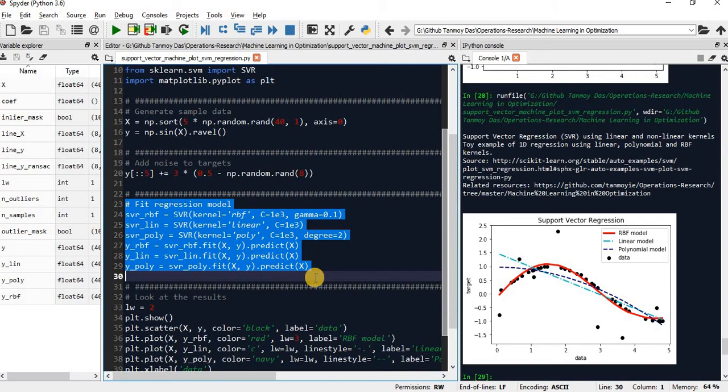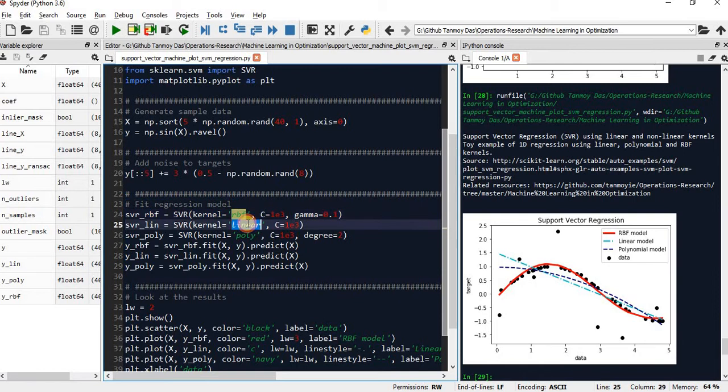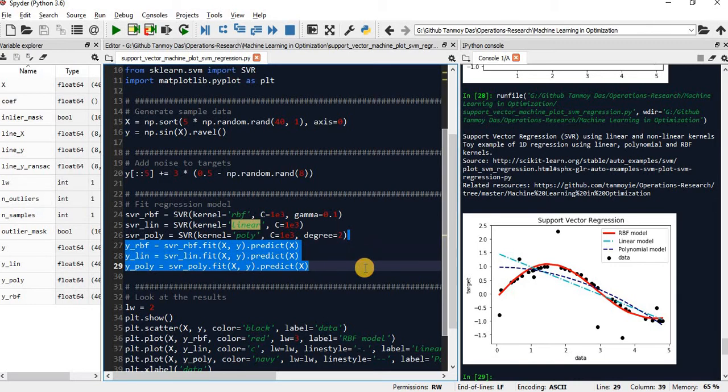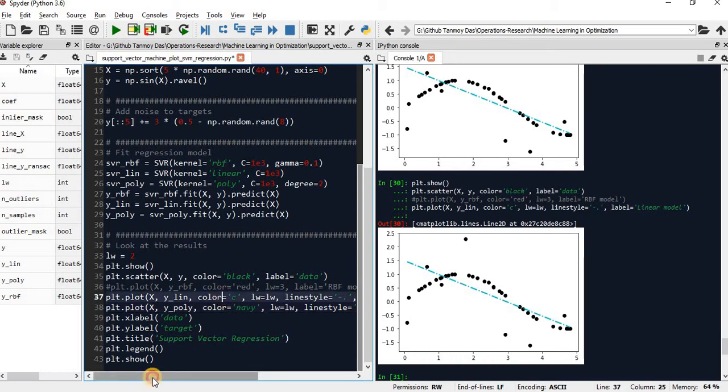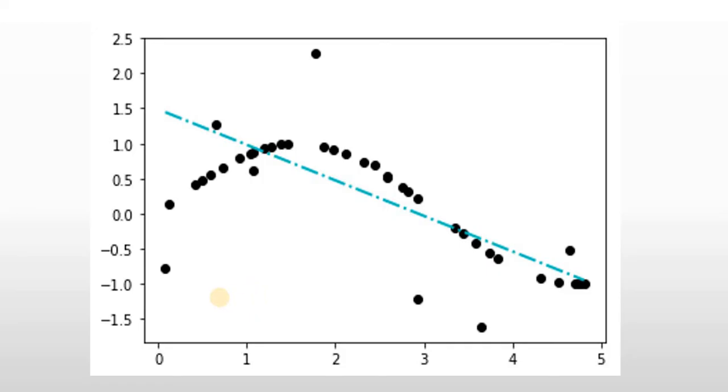One is Radial Basis Function, another one is Linear Regression, and another one is Polynomial. After fitting the model, we will predict the data points. If we run these lines of code, it will give us the estimated values. With the linear model, we can see this is the fitted line, and it misinterprets so many data points.